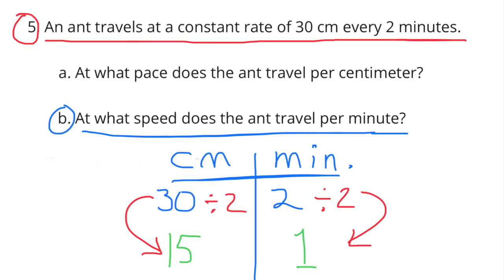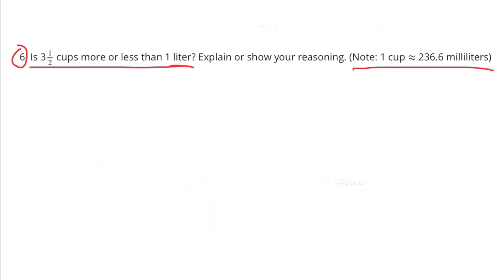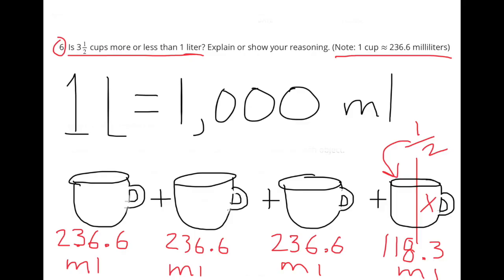Number 6: Is 3.5 cups more or less than 1 liter? Note: 1 cup equals about 236.6 milliliters. This time I decided to draw the cups—I drew three whole cups and one half cup. Underneath each cup I represented milliliters: 236.6 for the first three, and then half of that, 118.3 milliliters, for the half cup.